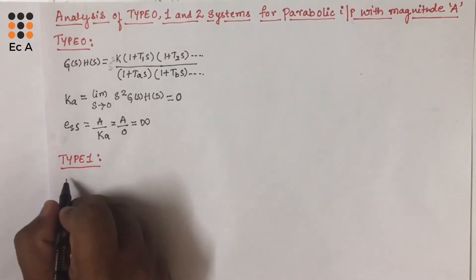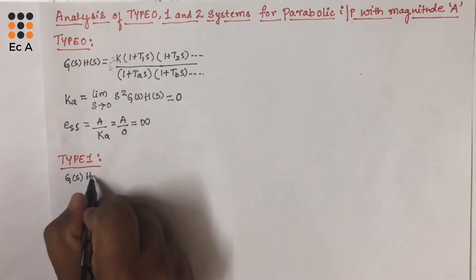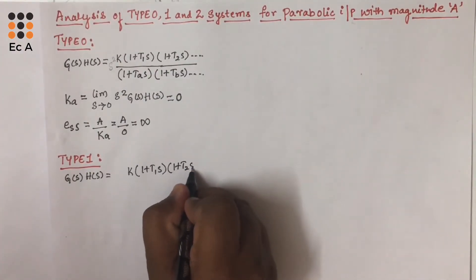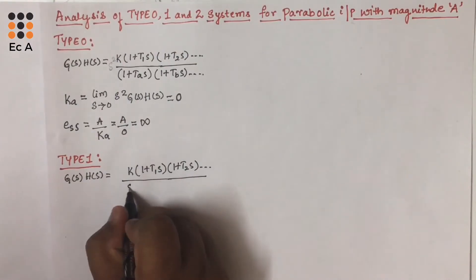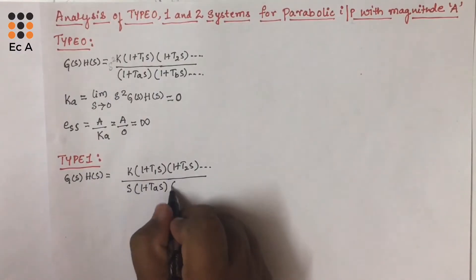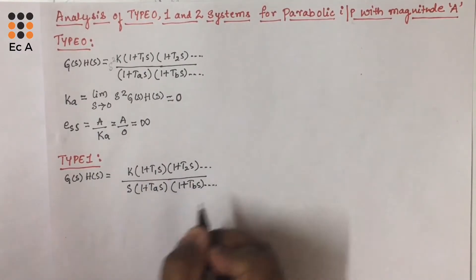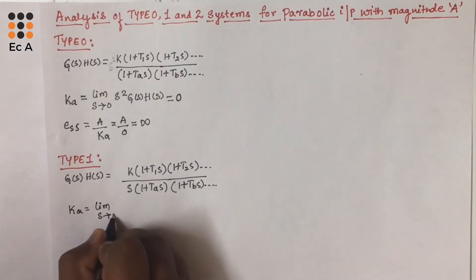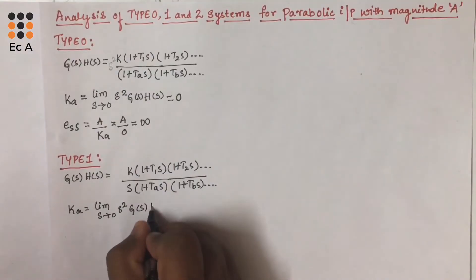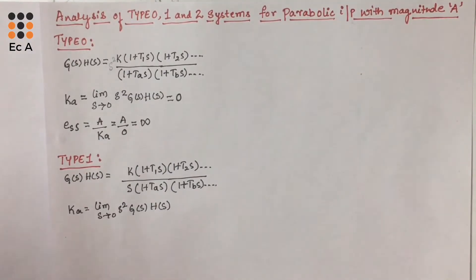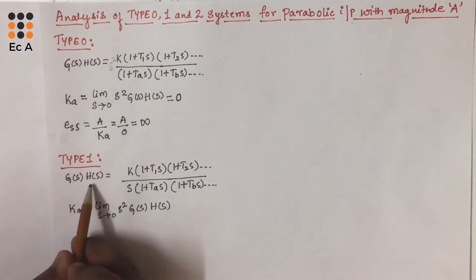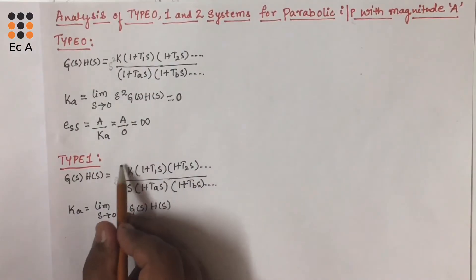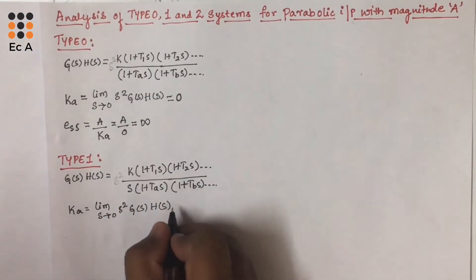Now let us consider type 1 system. Type 1 system can be represented as G(S)·H(S) = K · (1 + T1·S)(1 + T2·S) · ... / S · (1 + T_A·S)(1 + T_B·S) · ... The acceleration error coefficient Ka equals the limit as S tends to 0 of S² · G(S)·H(S). To find Ka, we multiply S² with G(S)·H(S) and apply the limit. If we multiply S² and apply limit S = 0, this equation will become 0, so Ka will be equal to 0.